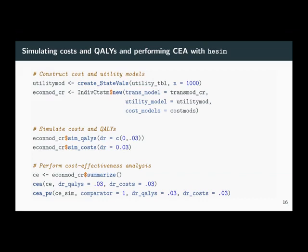Once you've simulated costs and utilities, we have integrated functions for performing cost effectiveness analysis. Utilities and costs, like disease progression, are simulated at the individual level — we have values for every treatment strategy, patient, and PSA iteration. To perform CEA, we summarize those by taking means across patients using the summarize function. We have two types of CEA functions: one is the standard CEA looking at all treatment strategies simultaneously, and the other is the CEA pairwise function comparing all strategies to a given comparator.